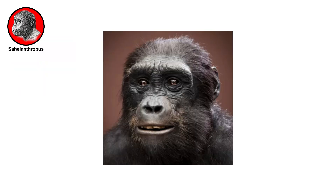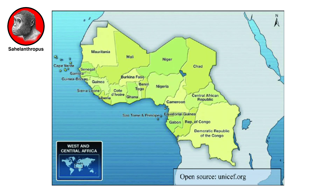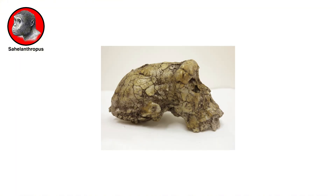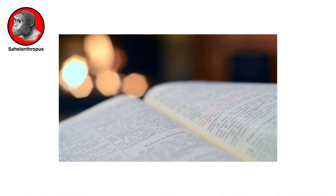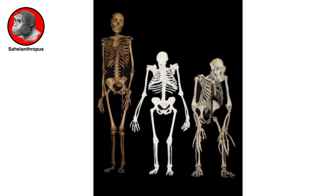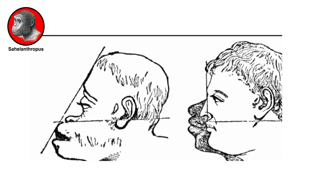Sahelanthropus is one of the oldest known species in the human family tree. This species lived sometime between 7 and 6 million years ago in West Central Africa. Although we have only cranial material from Sahelanthropus, studies so far show this species had a combination of ape-like and human-like features. Ape-like features included a small brain, sloping face, very prominent brow ridges, and elongated skull.